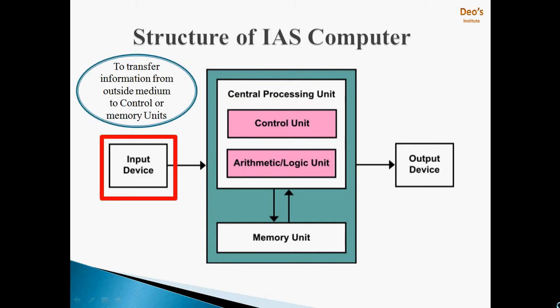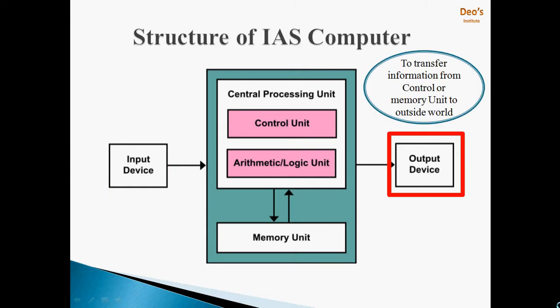Next is the input device. We need some device to transfer information from the outside medium to the computer, and this is done through the input device. Through the input device, we can send control signals or data to the memory unit and the central processing unit. Another element is the output device — whatever the result of the computer's operations, it needs to be conveyed to the outside world, and the output device is used to transfer that information from the computer to the outside world.